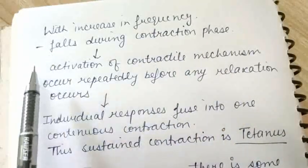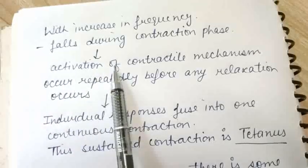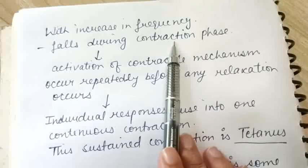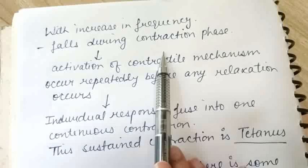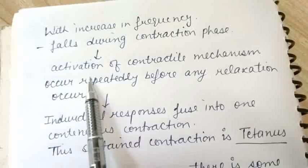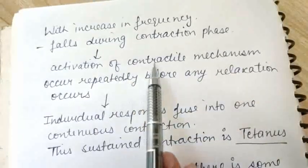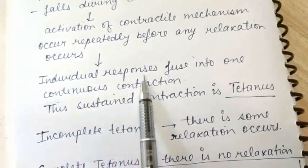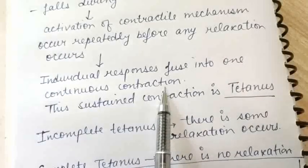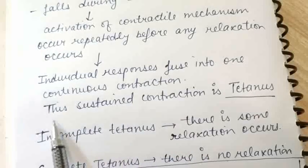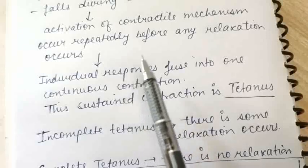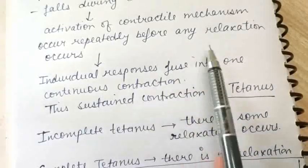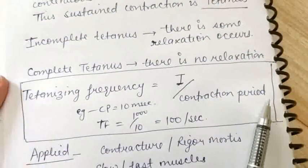With increase in frequency, the stimulus falls during the contraction phase — so it's falling during early contraction phase. Activation of the contractile mechanism occurs again. If the stimulus is falling in contraction phase, relaxation has not started; there is still calcium in the cytoplasm and you are stimulating again. The contractile mechanism is already active, so activation occurs repeatedly before any relaxation occurs. Individual responses fuse into one continuous contraction — a sustained contraction called tetanus.